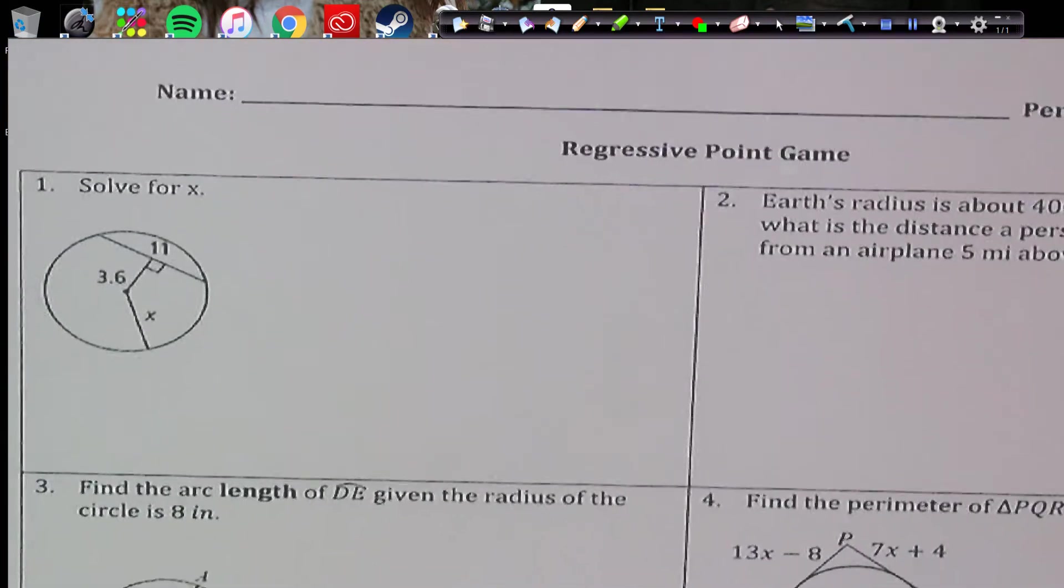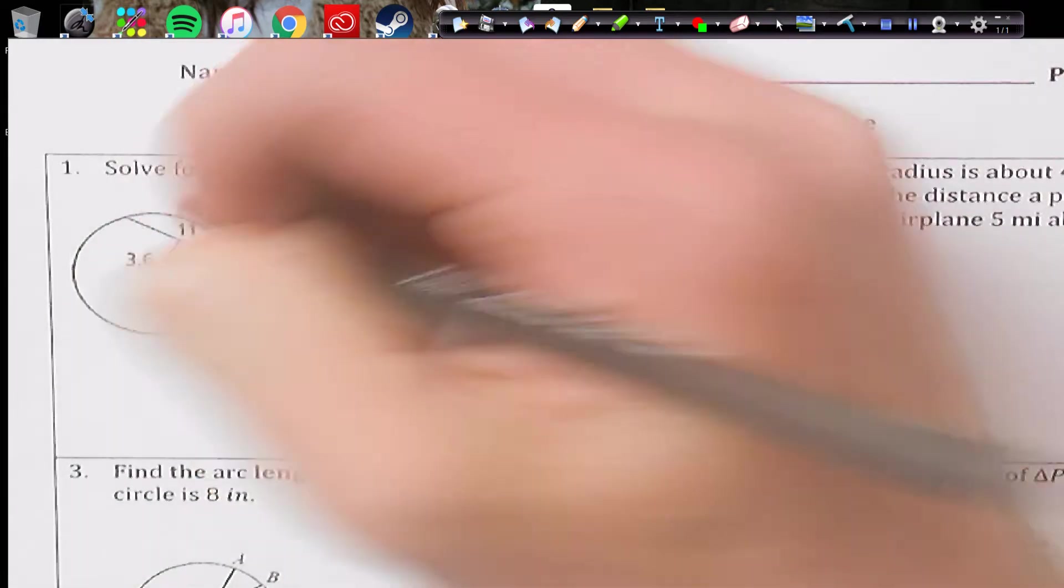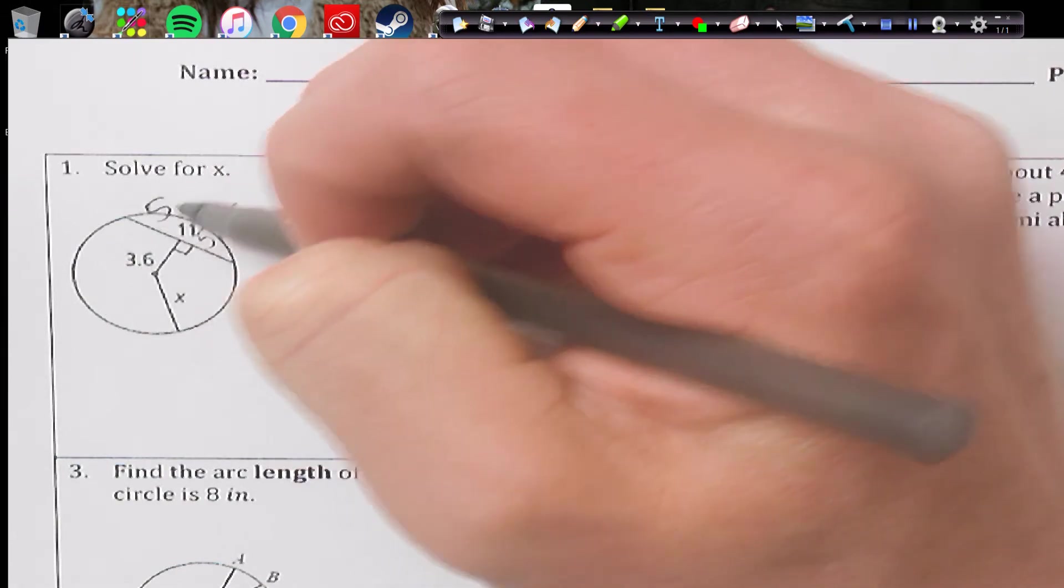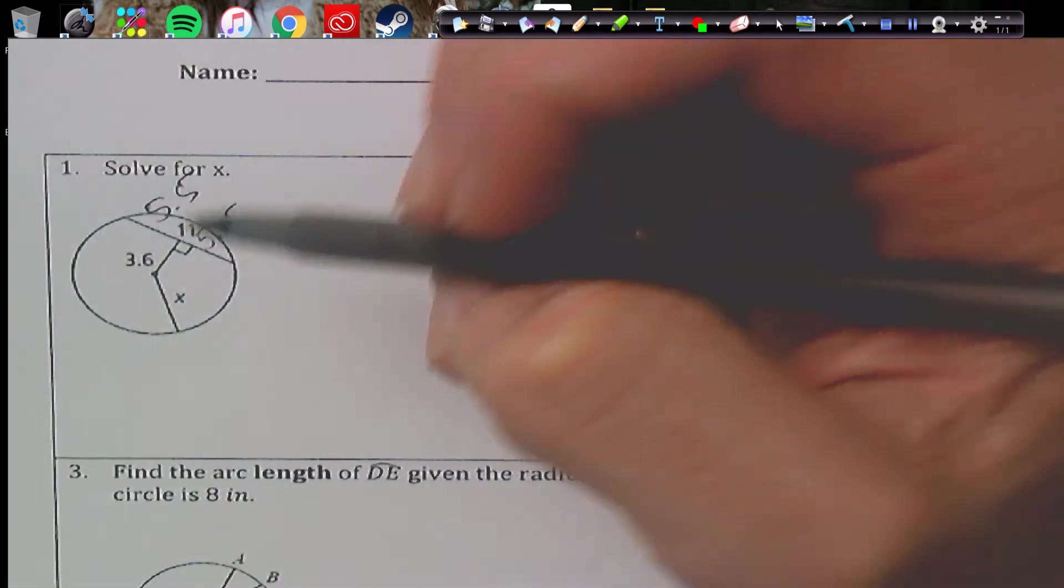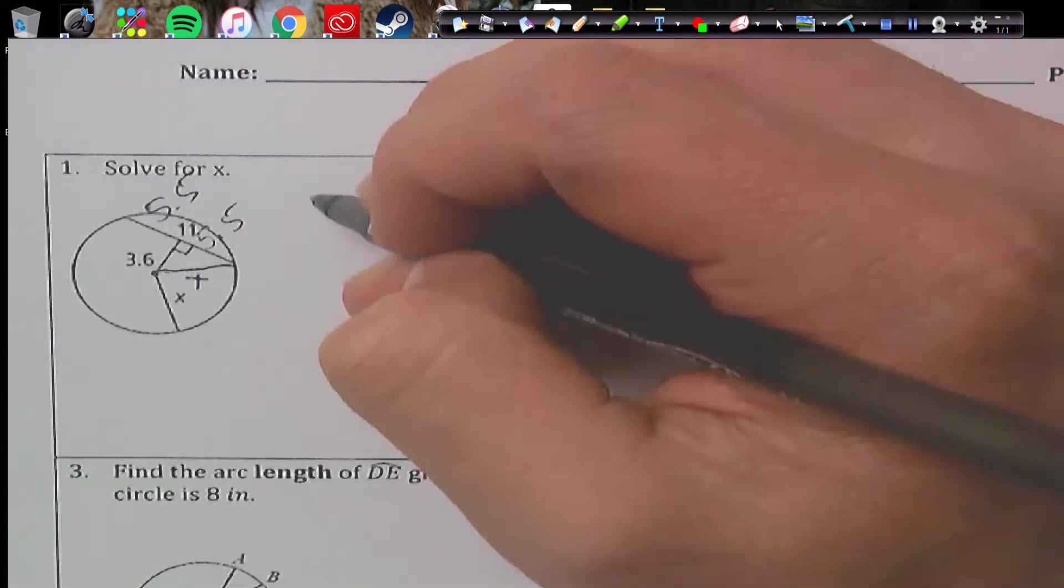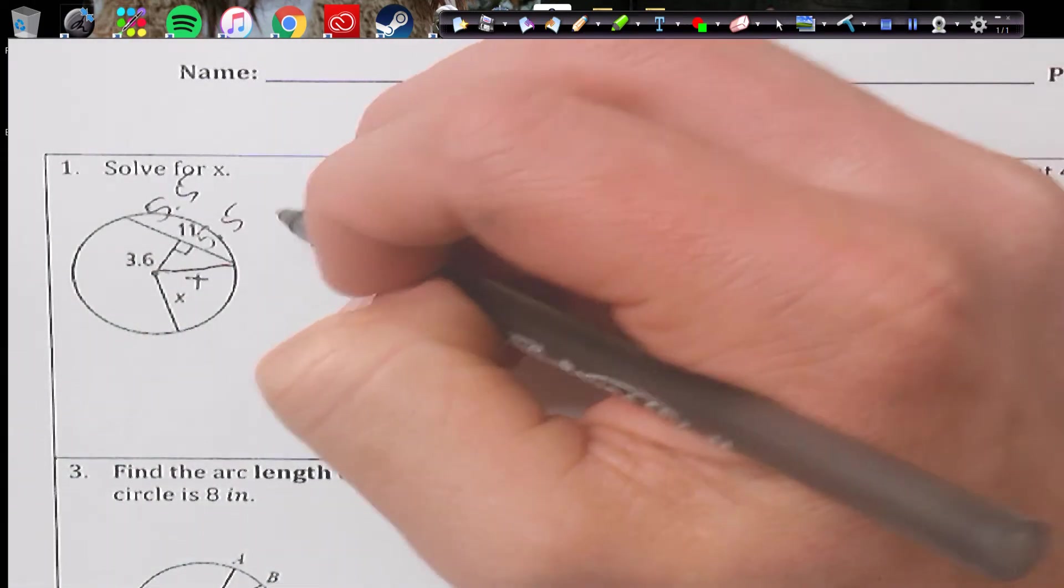Okay, number one. We have right here a 90 degree, which is going to split this into 5.5 and 5.5. And we can actually draw this down in here and put x because it's the radius and now we get a special right triangle. So we get 3.6.